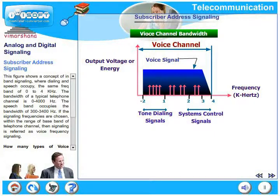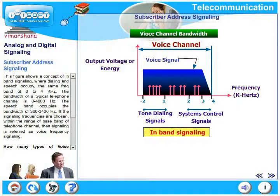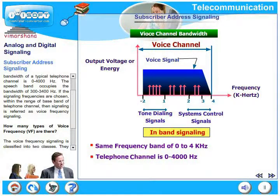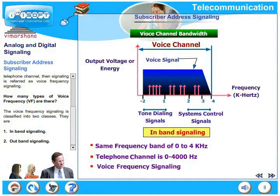This figure shows the concept of in-band signaling, where dialing and speech occupy the same frequency band between 0 hertz to 4 kilohertz. The bandwidth of a typical telephone channel is up to 4000 hertz. The speech band occupies a bandwidth of 300 to 3400 hertz. If the signaling frequencies are chosen to be within the range of the baseband telephone signal, then this type of signaling is referred to as voice frequency signaling.